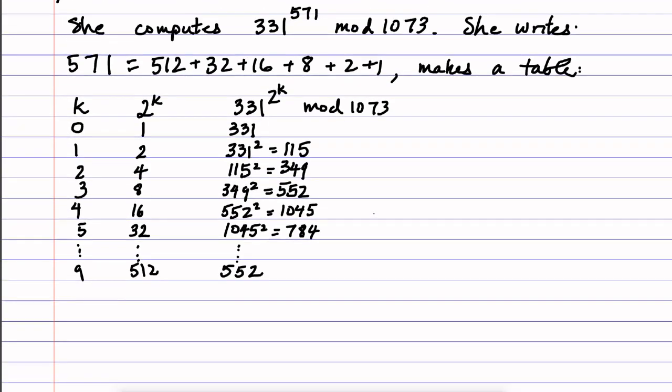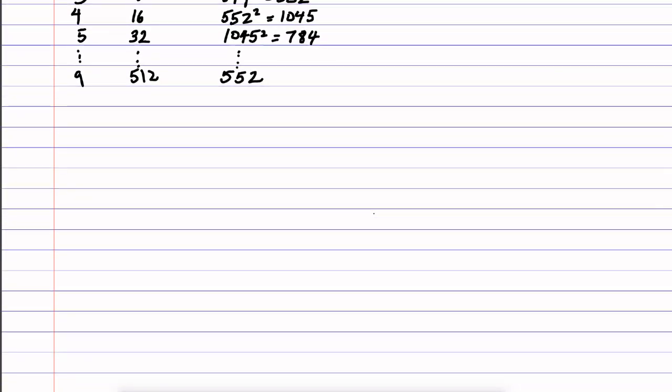Anyway, on to the next step. So now Alice is going to use properties of exponents and the previous table in order to compute that large power. So just using properties of exponents, what she's able to do is take this 331 to the 571 and write it as 331 to a sum, right?